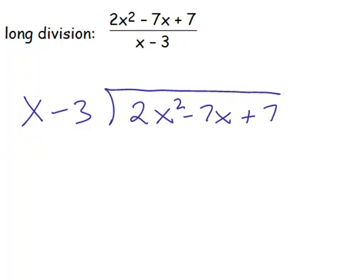We divide one term at a time. We start by dividing x into the 2x squared. And that value is 2x. Remember, we must decide what is it that we can multiply by x to get 2x squared.